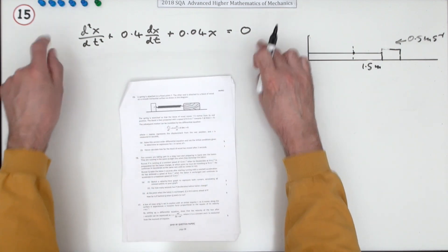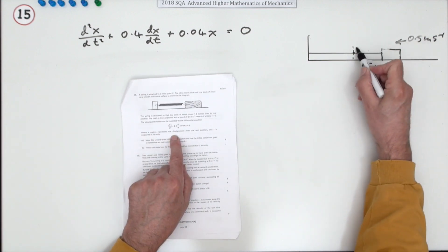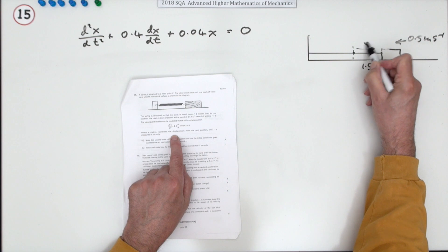The subsequent motion, it says, can be modeled by this differential equation where x represents the displacement from the rest position, so that's the distance x there.